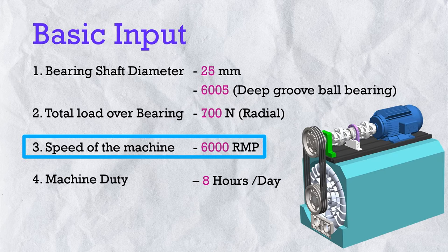A bearing manufacturer cannot define L10 at every possible load for every bearing size, so they define the basic dynamic load rating C for all bearing sizes, found in every datasheet. For bearing 6005, C = 11.9 kN. The basic dynamic load rating C is the constant stationary load under which a rolling bearing can theoretically achieve a basic rating life of 1 million revolutions — in other words, the load a bearing can sustain for 1 million revolutions before fatigue failure.